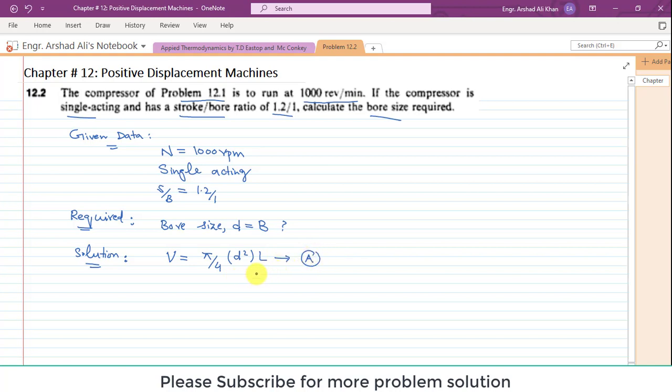Of the cylinder. Now d is actually the bore size, so d is equal to B. And length of the cylinder is nothing but the stroke, so L is equal to capital S.